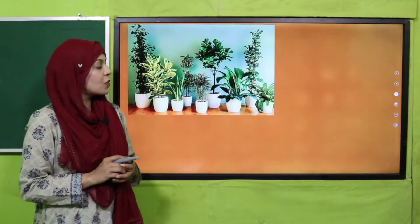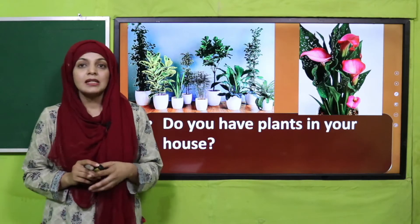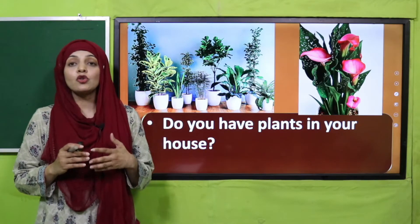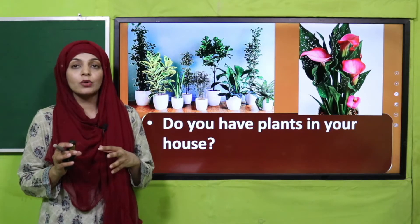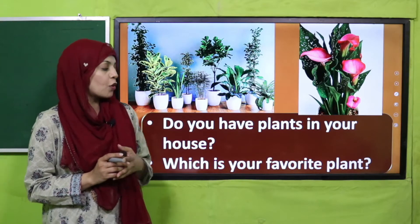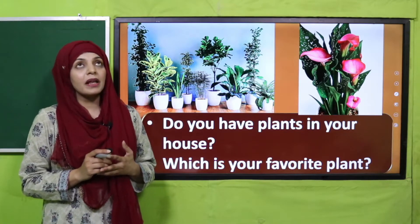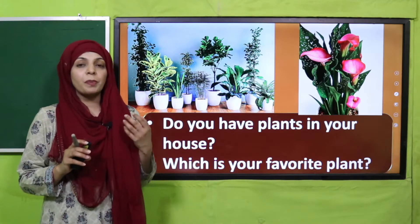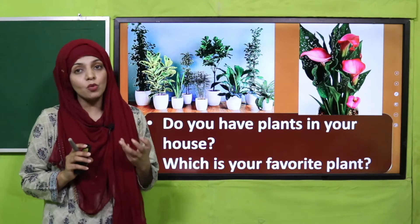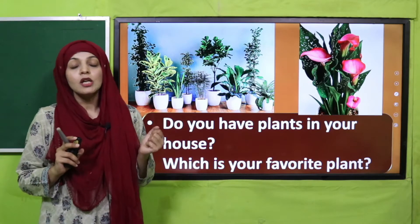Now let's do an activity. Look at these pictures carefully and tell me: do you have plants in your house? We keep different plants in flower pots, outside our homes, or in our lawns. Some plants in my home have flowers, some have fruits — like a fig tree. My favorite plant is the lemon plant because it bears many lemons and lemons are very beneficial. Quickly name your favorite plant.